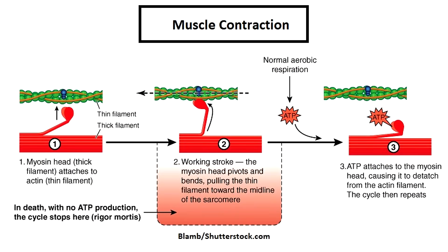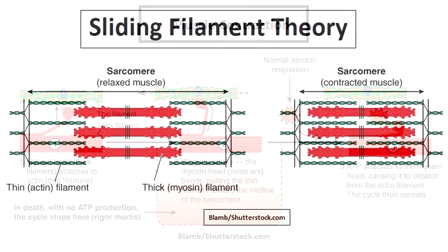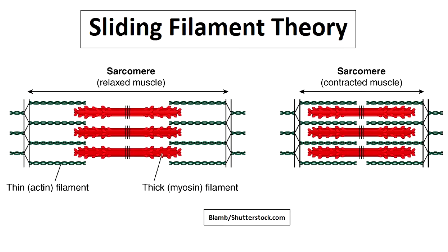During muscle contraction, thick myosin filaments located within the sarcomere bend, and the knobby head part attaches to the thin actin filaments and slides them toward the middle of the sarcomere. This sliding of filaments causes the sarcomere to shorten or contract. As this takes place all along the sarcomeres within that myofibril, the entire muscle fiber contracts, which causes the entire muscle organ to shorten or contract.